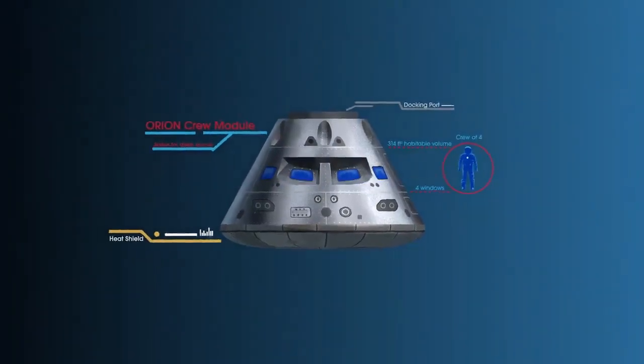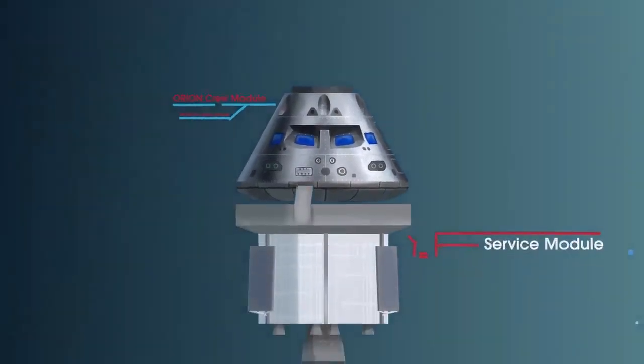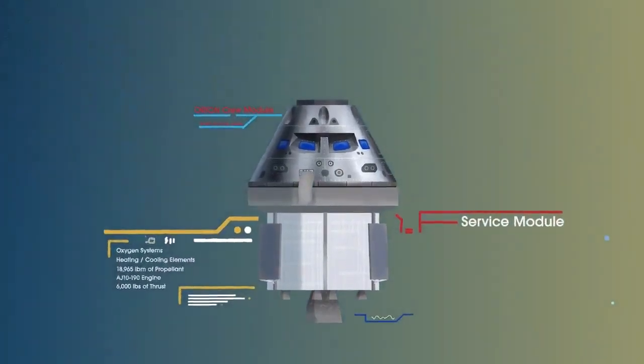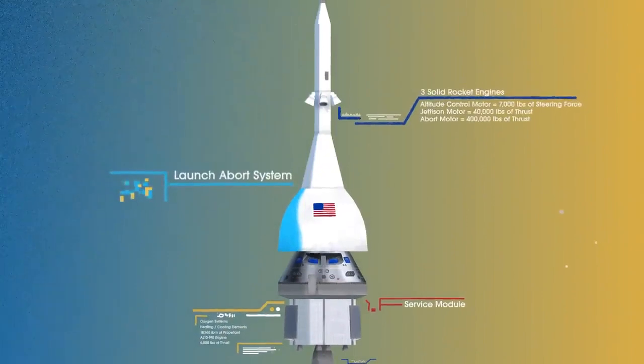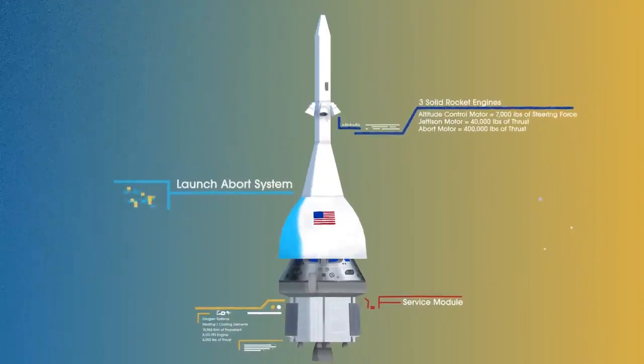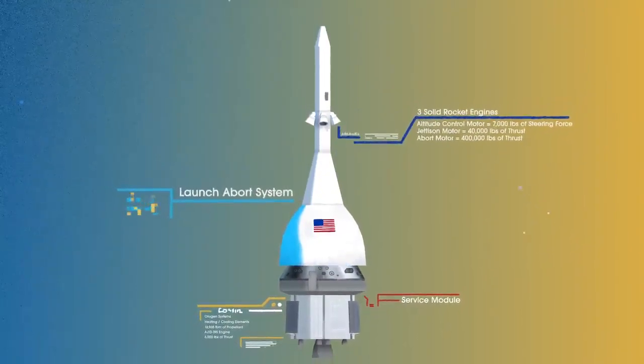The crew module, where up to four astronauts will live and work throughout the flight. The service module, with life-support systems for the crew and its own engine and fuel reserves. And a launch abort system, with engines capable of pulling the crew module to safety during launch should anything go wrong.